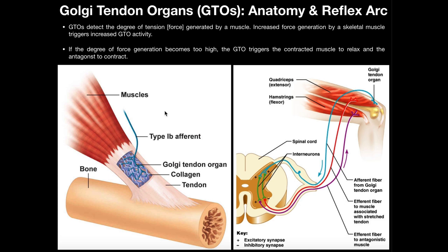In terms of exercise, Golgi tendon organs have another function. If the degree of force generation by a muscle becomes too high, the Golgi tendon organ triggers the contracted muscle to relax and the antagonist to contract. After looking at the next couple of slides, we'll come back and examine this reflex arc.